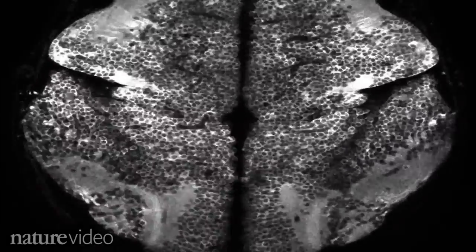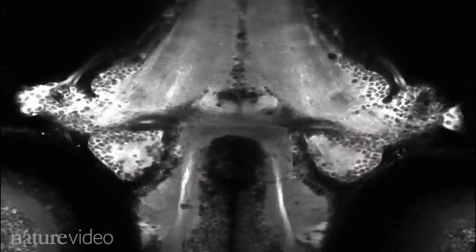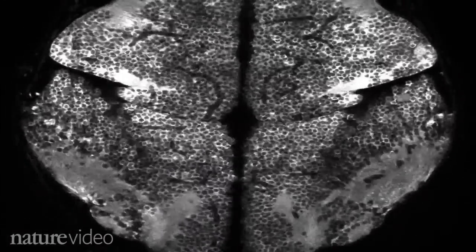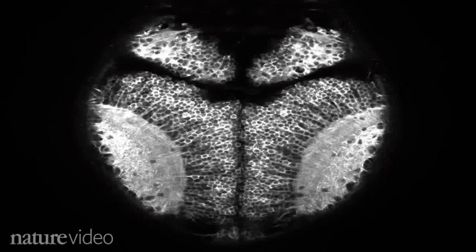Last year, the team systematically zoomed in on different parts of the brain until they had tracked the activity of all 300,000 neurons as the fish were fictively swimming. This is the first whole brain picture in any living animal.